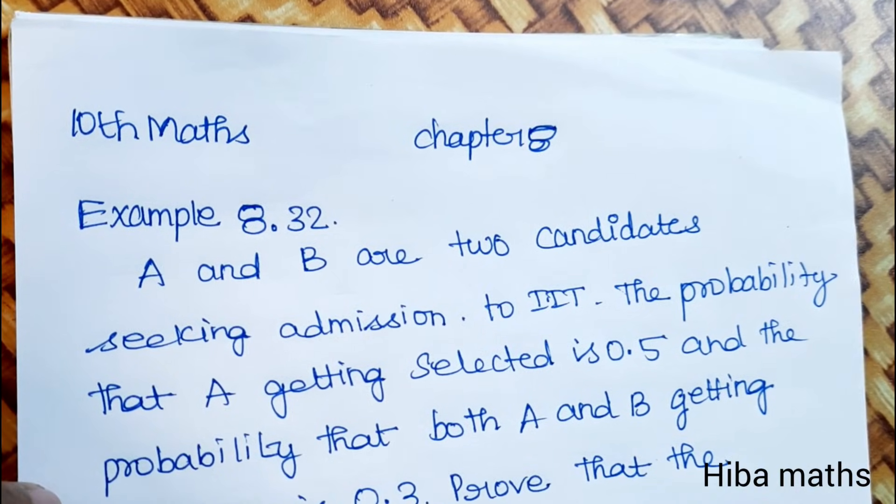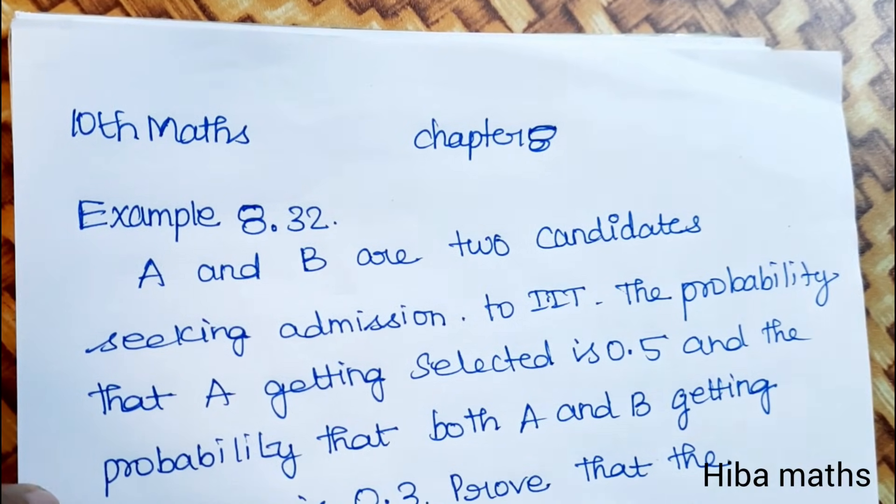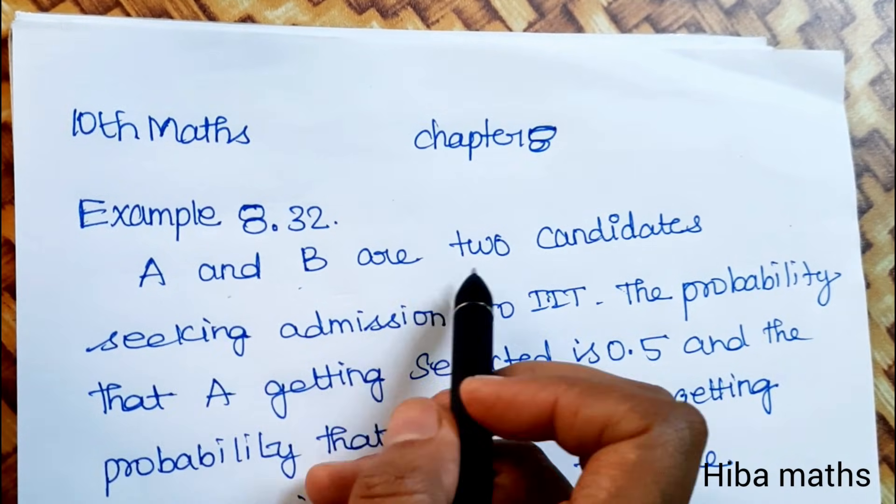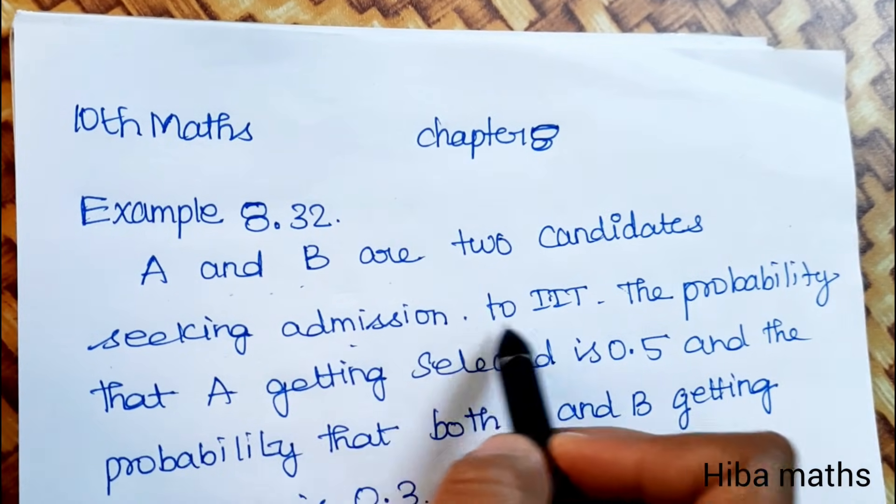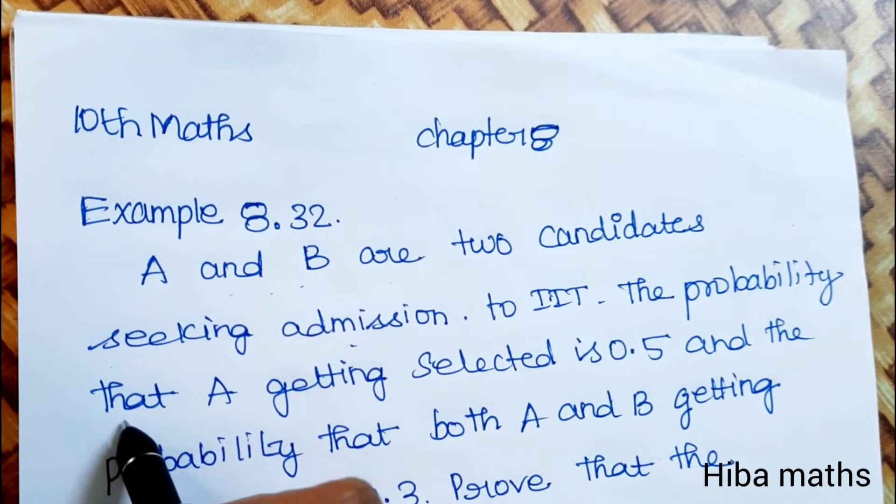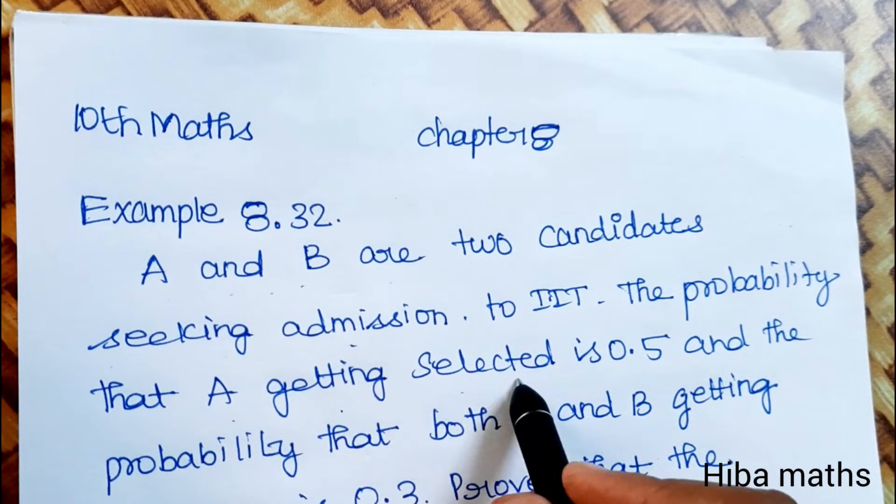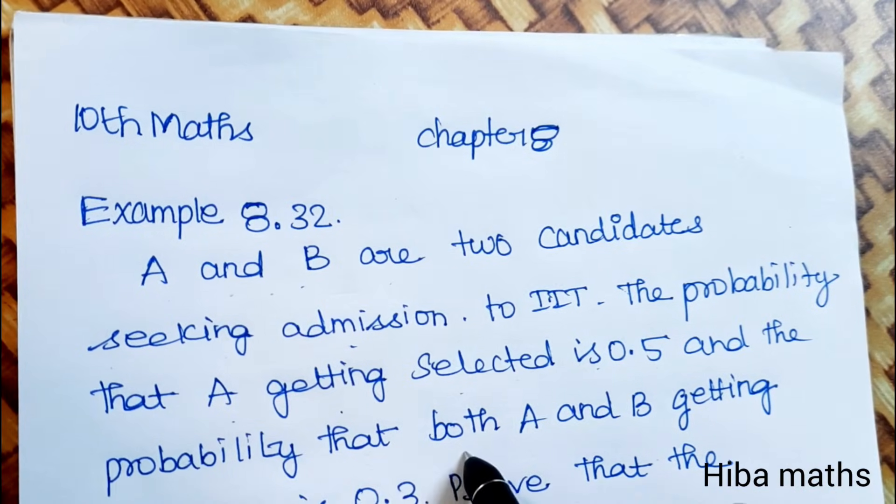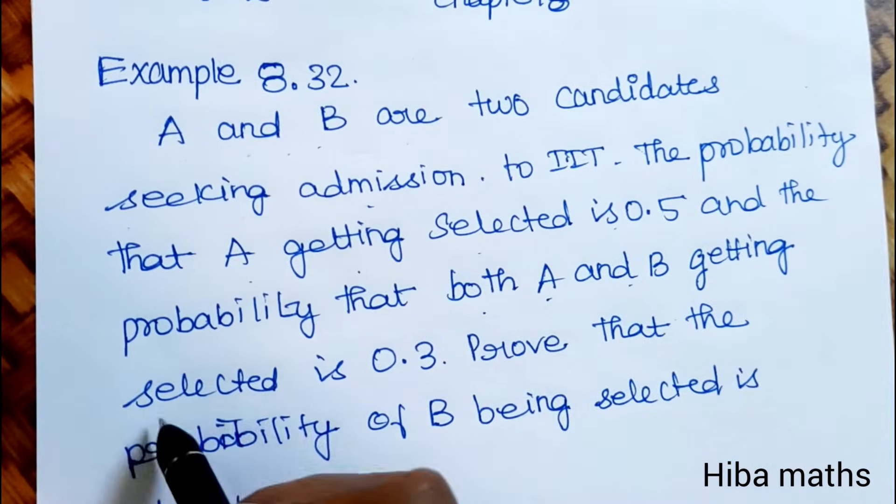Hello students, welcome to Hiba Maths. 10th standard Maths, Chapter 8, Example 8.32. A and B are two candidates seeking admission to IIT. The probability that A getting selected is 0.5, and the probability that both A and B getting selected is 0.3.